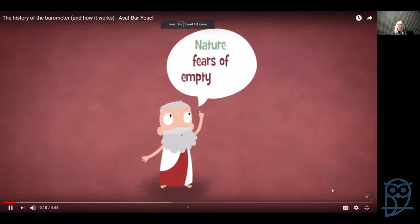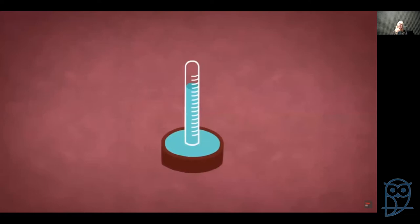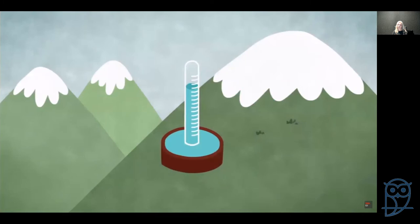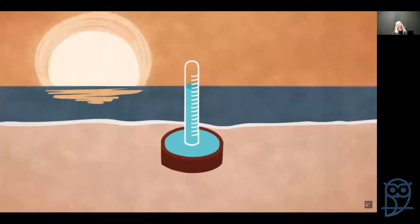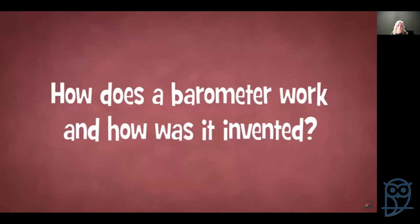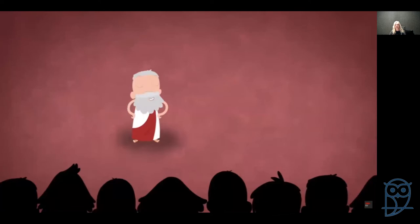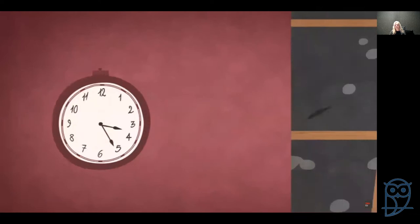Aristotle famously said 'nature fears empty space,' claiming that a true vacuum — a space devoid of matter — could not exist because surrounding matter would immediately fill it. Fortunately, he turned out to be wrong. A vacuum is a key component of the barometer, an instrument for measuring air pressure. Because air pressure correlates to temperature and rapid shifts in it can contribute to hurricanes, tornadoes, and other extreme weather events, a barometer is one of the most essential tools for weather forecasters and scientists.